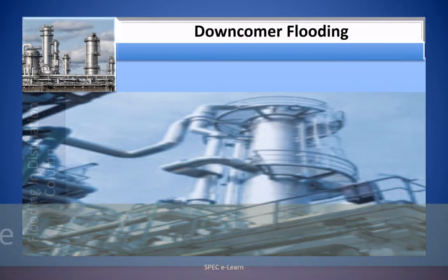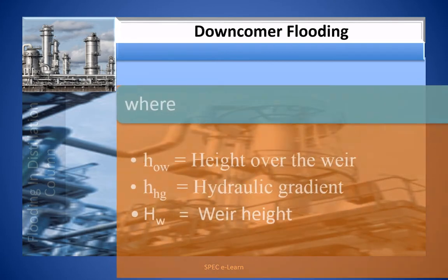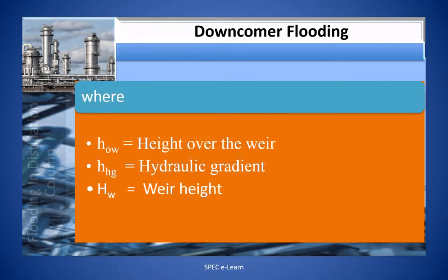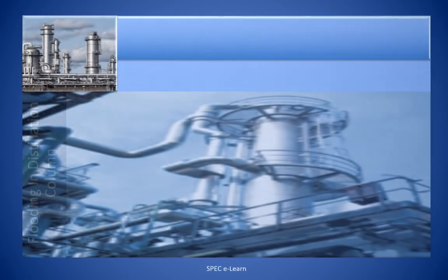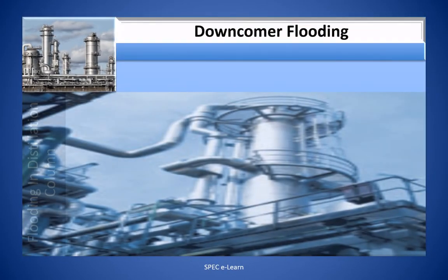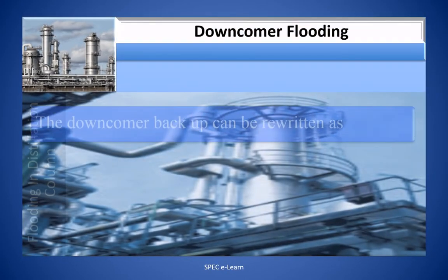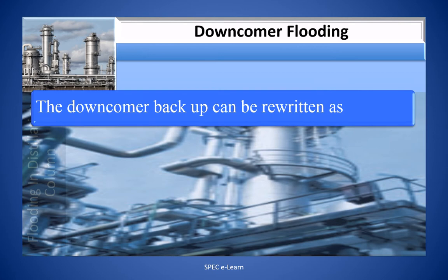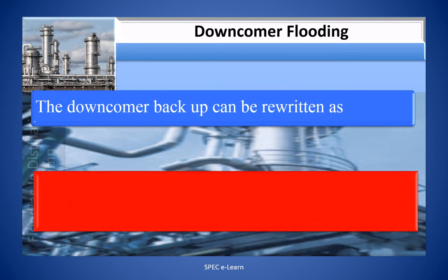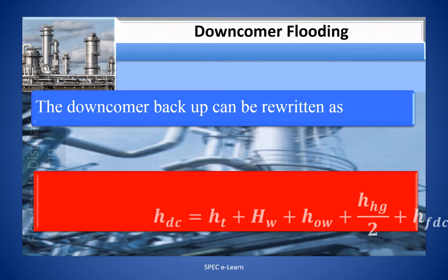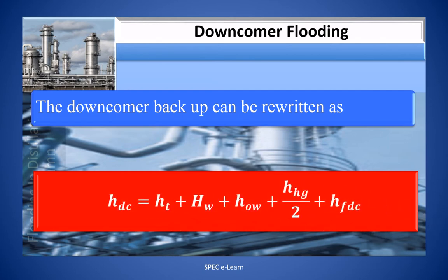Where H_OW is the height over the weir and H_HG is the hydraulic gradient. Thus, the downcomer backup can be written as: H_DC = H_T + H_W + H_OW + H_HG/2 + H_FDC.